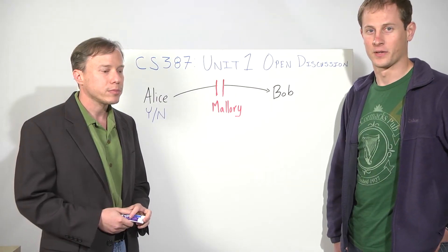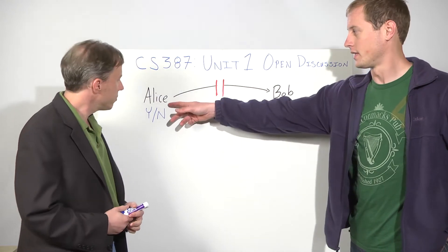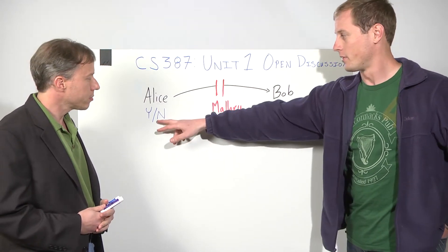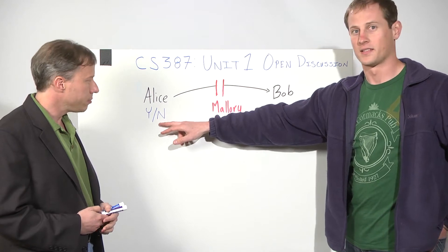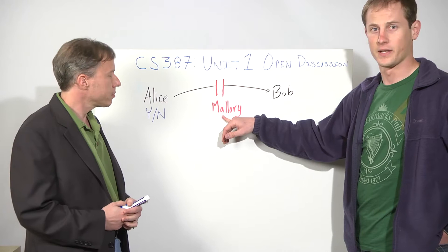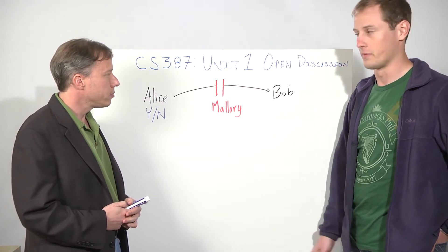Now I'd like to talk about the open discussion question posted in Homework 1. To review, Alice wants to send a message to Bob using a one-time pad to let Bob know yes or no if she's going to be taking CS387, and they're worried about Mallory, who could possibly intercept the message and then change around the message so that Bob would get the wrong message.